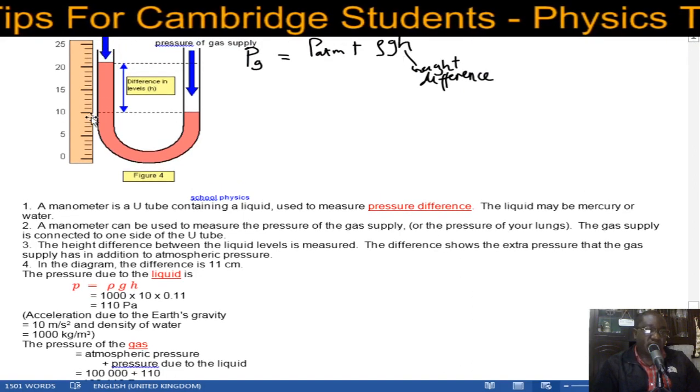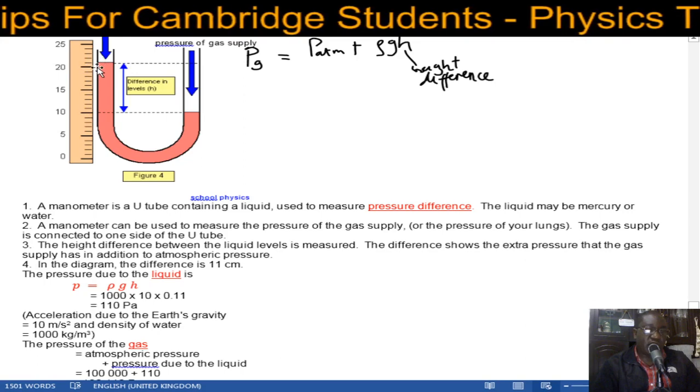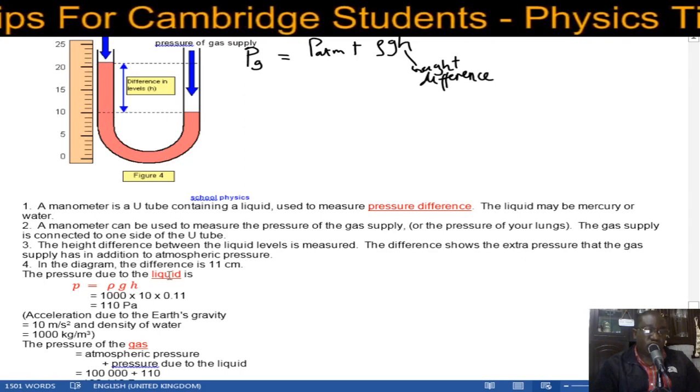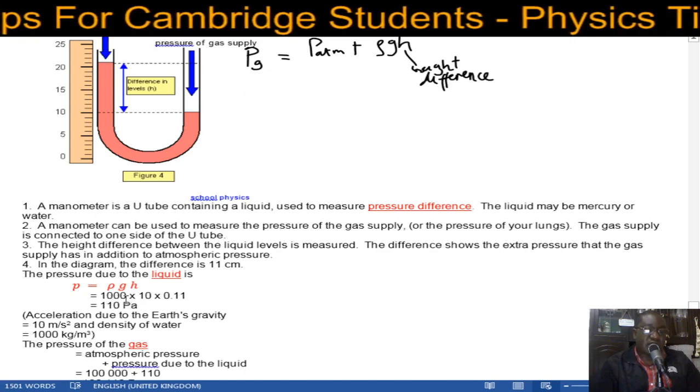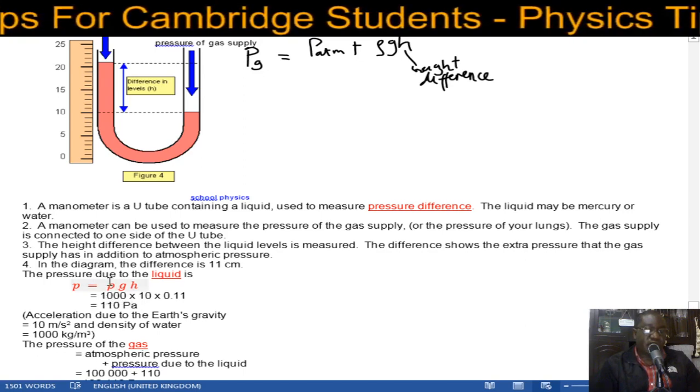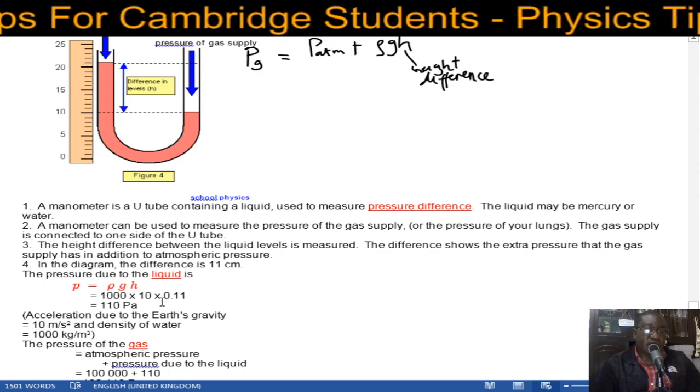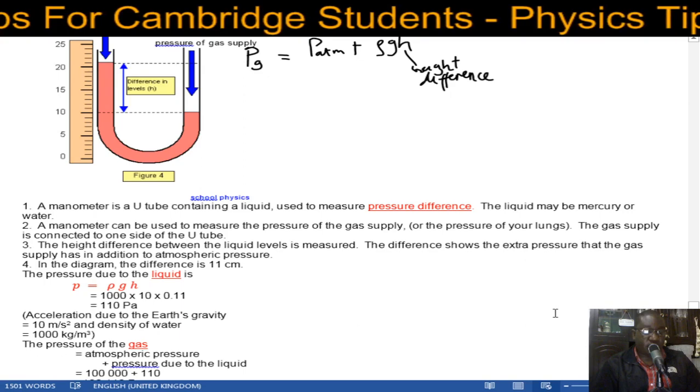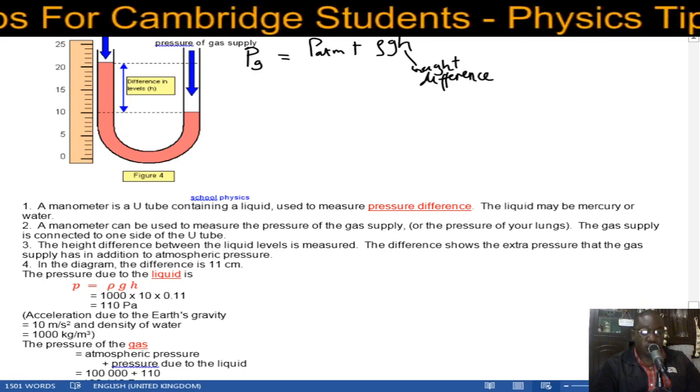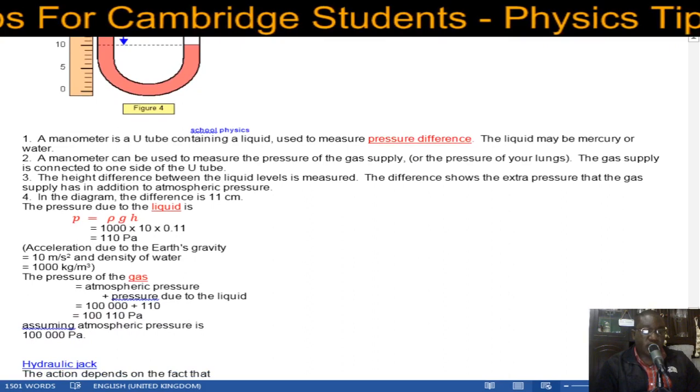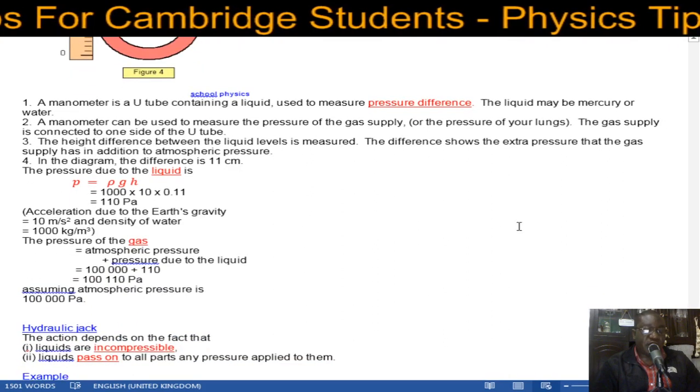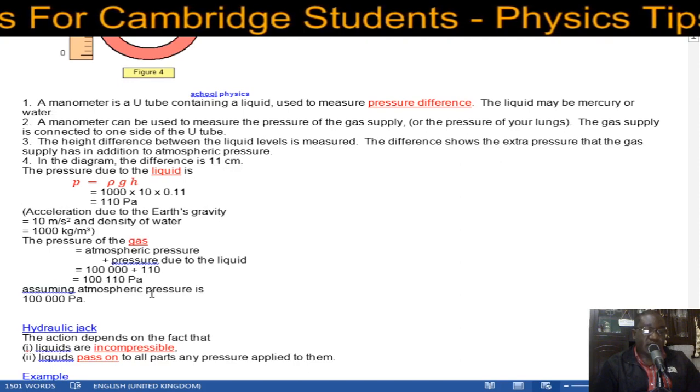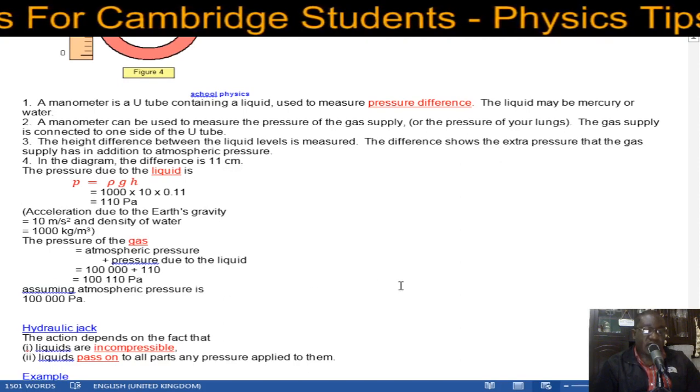In this case here, the height difference is 11. You measure it from here, starting from 10 and then it's going to be 21, so 21 minus 10, that's 11 centimeters. So we have 1000 (the density of water) times 10 times 0.11, giving 110 pascals. Then the total pressure will be atmospheric pressure plus that 110, which gives you 100,110 pascals.